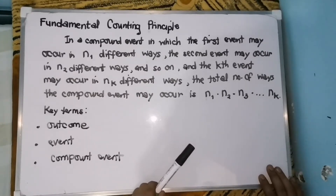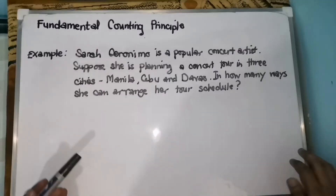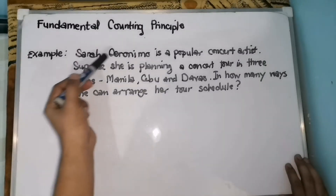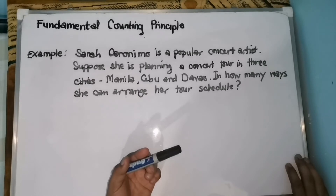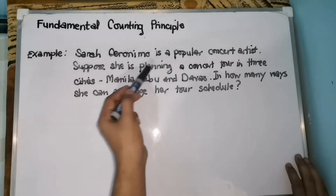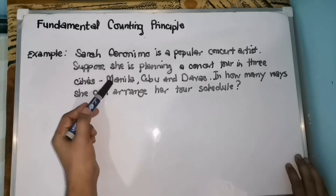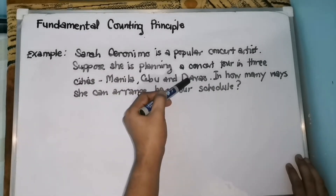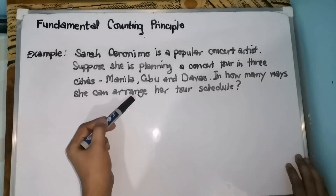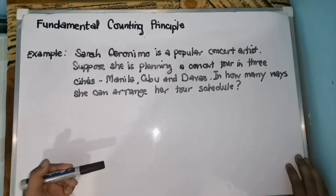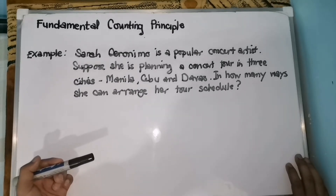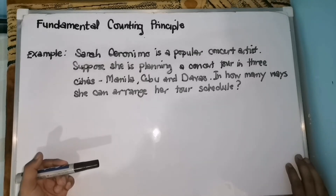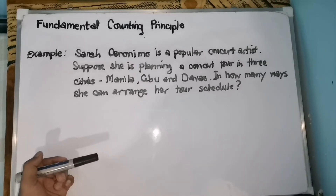Let's have an example. Sarah Geronimo is a popular concert artist — who doesn't know pop star royalty Sarah Geronimo? Suppose she is planning a concert tour in three cities: Manila, Cebu, and Davao. We will help Sarah Geronimo arrange her schedule — in how many ways can she arrange her tour schedule? If there is no restriction on the order of performances, then Sarah may start in any one of the three cities.